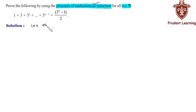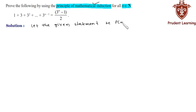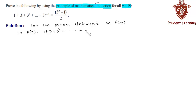Let the given statement be P(n), that is P(n): 1 + 3 + 3² + ... up to 3^(n−1) equals (3^n − 1) / 2.